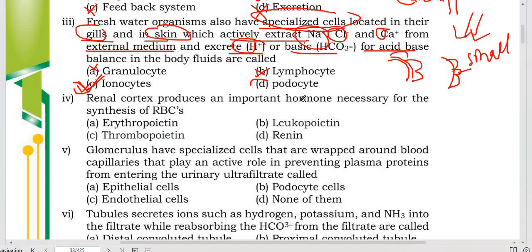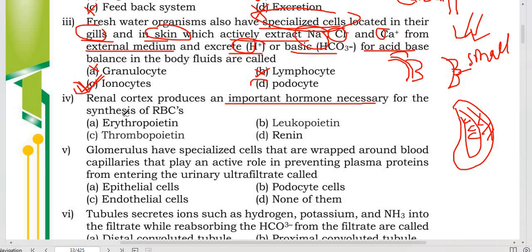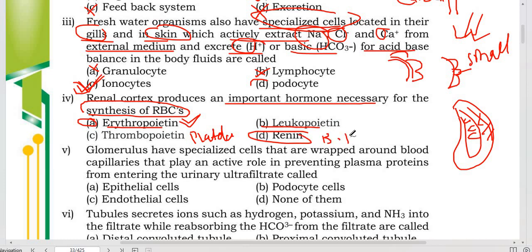The renal cortex produces important hormones. The kidney has two parts: the outer renal cortex and the inner renal medulla. Renin is released from the kidney and its function is related to blood pressure — when blood pressure is reduced, renin is released and it acts to increase blood pressure.